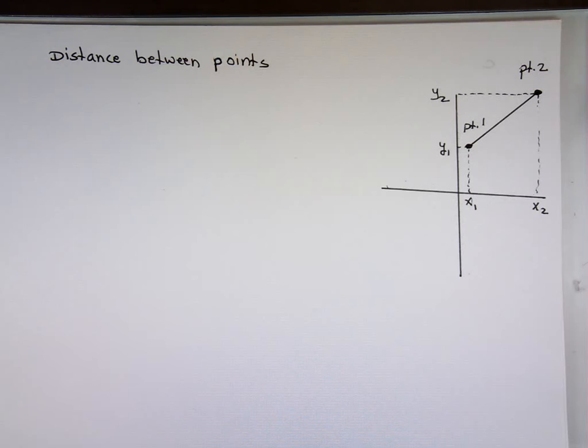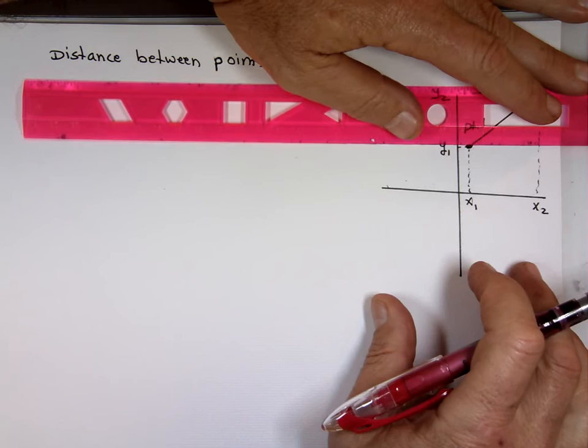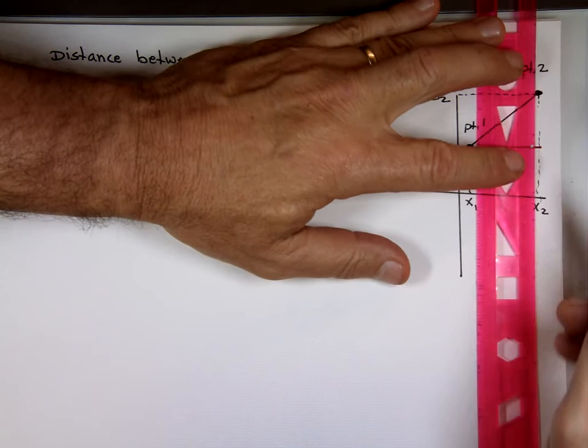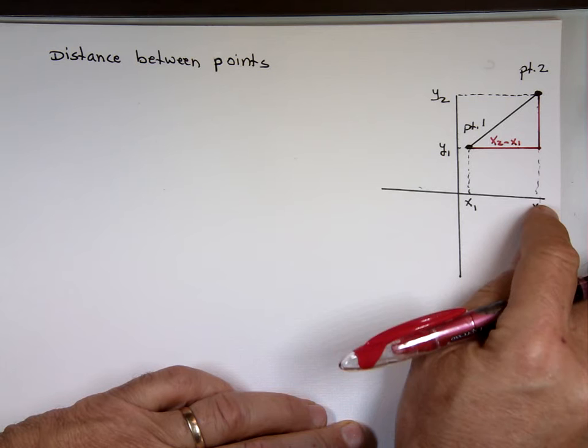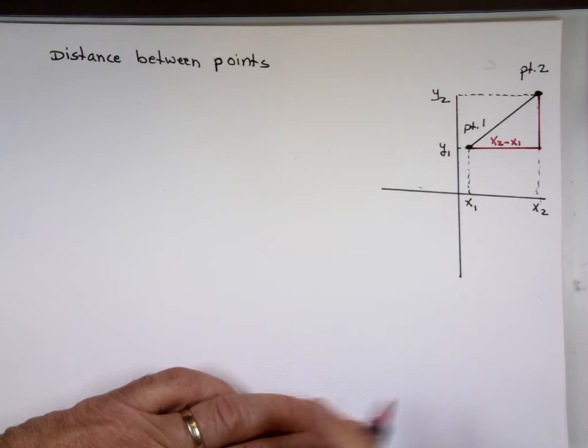If I make a triangle out of that — a right triangle — what is the distance from here to there in terms of X2 and X1? It's X2 minus X1. It's this X-value minus that one. And what's the height here in terms of the Y's? Same thing: Y2 minus Y1.